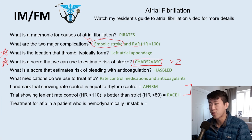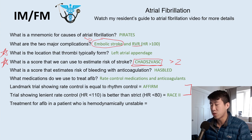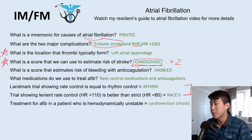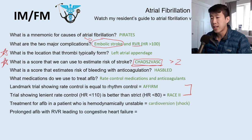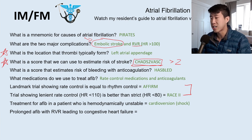For treatment of AFib in a hemodynamically unstable patient — blood pressure 60 over 40, rapid AFib with RVR — the answer is cardioversion; you directly shock them out of the rhythm. If a patient has prolonged AFib with RVR and then starts to develop congestive heart failure, that condition is called tachycardia-mediated cardiomyopathy — a pimp question I got as a medical student.